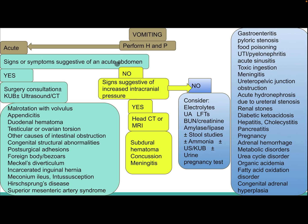Additional causes include meconium ileus, intussusception, Hirschsprung's disease, and superior mesenteric artery syndrome. If there are no signs or symptoms suggestive of acute abdomen, the next question is whether there are signs or symptoms suggestive of increased intracranial pressure.